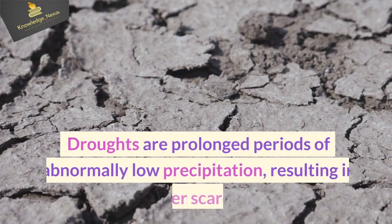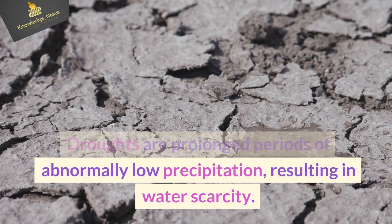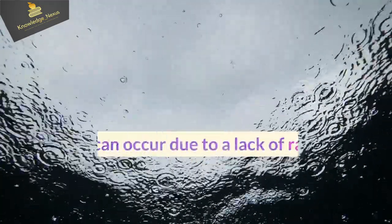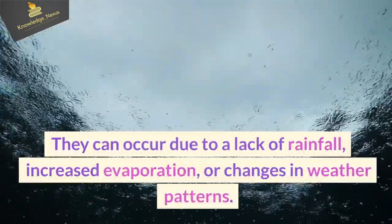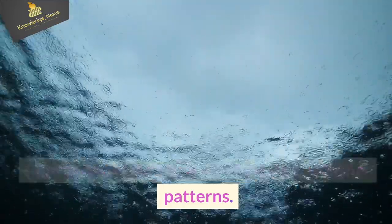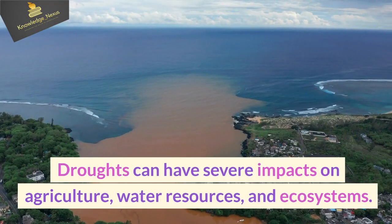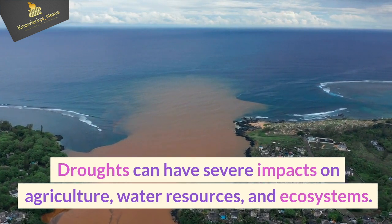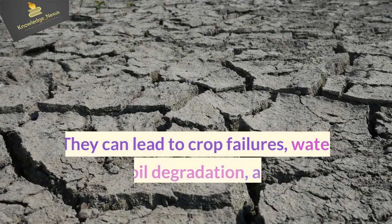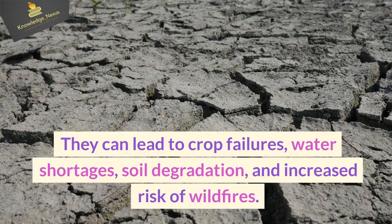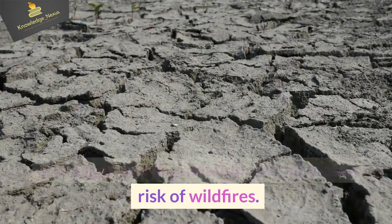Droughts are prolonged periods of abnormally low precipitation resulting in water scarcity. They can occur due to lack of rainfall, increased evaporation, or changes in weather patterns. Droughts can have severe impacts on agriculture, water resources, and ecosystems, and can lead to crop failures, water shortages, soil degradation, and increased risk of wildfires.